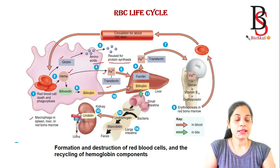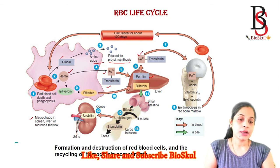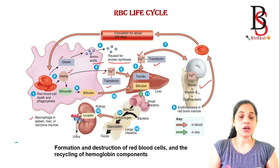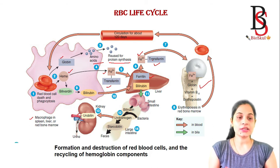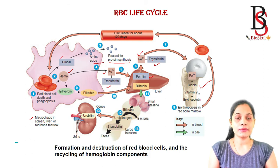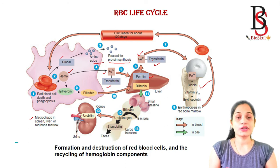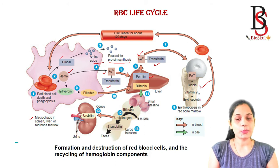Iron combined with transferrin is transported to liver cells, where the iron atom binds with the iron storage protein ferritin. When iron leaves storage, it again combines with transferrin and is transported to the red bone marrow. There, erythrocyte precursor cells receive the iron-transferrin combination by receptor-mediated endocytosis, forming mature red blood cells that are released into circulation, where they live about 120 days.